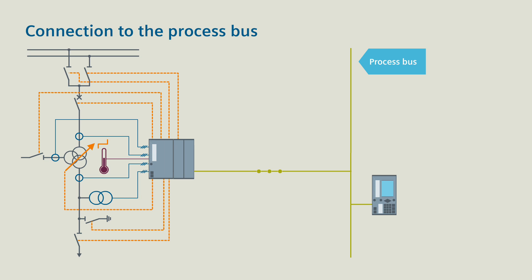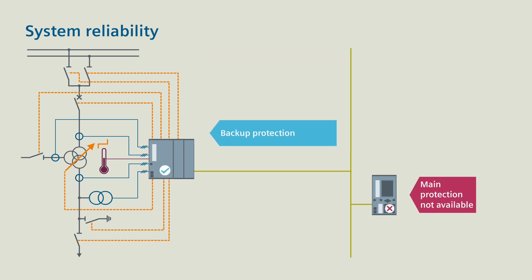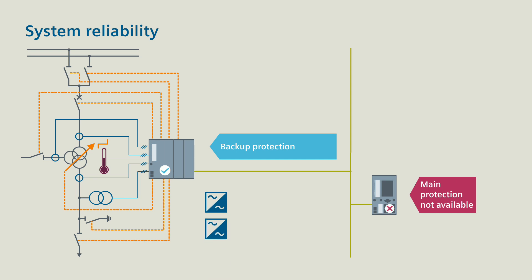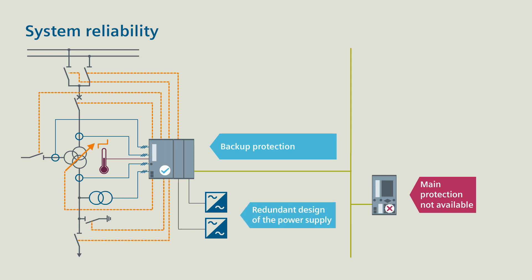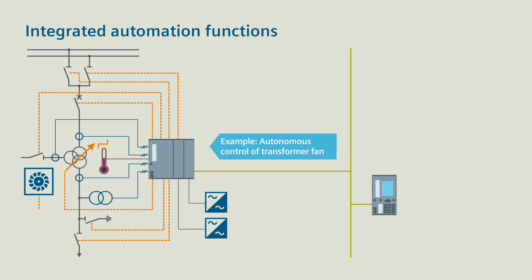The C-Protek 6MU85 merging unit can do even more. If the main protection is not available, the backup protection integrated in the merging unit provides the necessary system functions. You get additional system reliability with a redundant design of the power supply. And with integrated automation functions, the merging unit can take over the control of the transformer fan completely autonomously, depending on the measured temperature, for example.